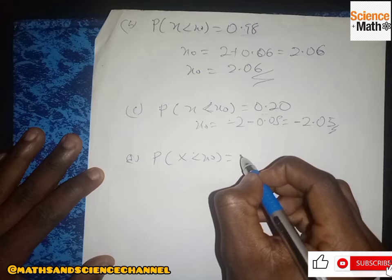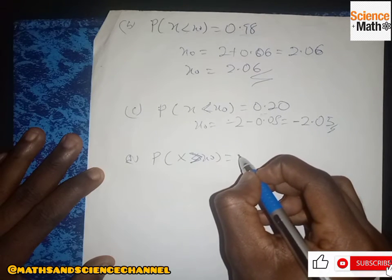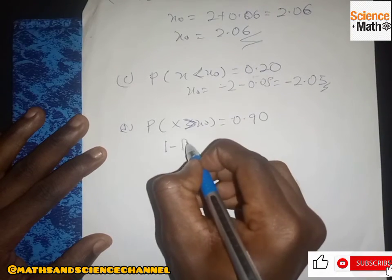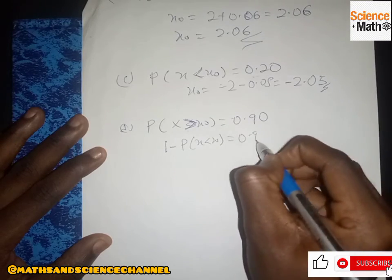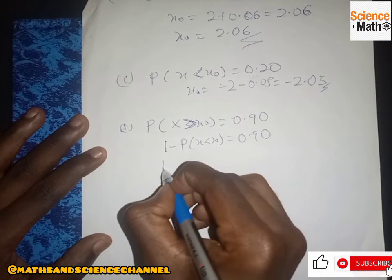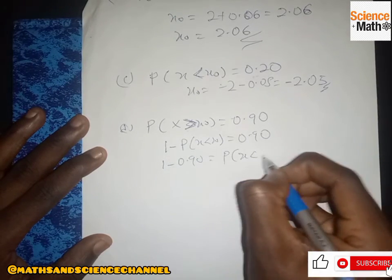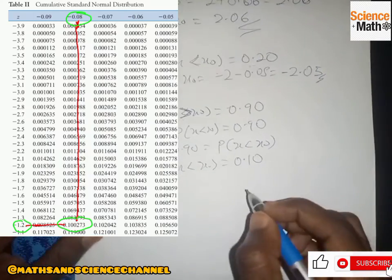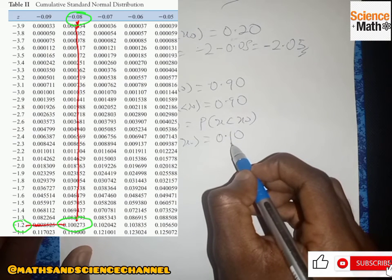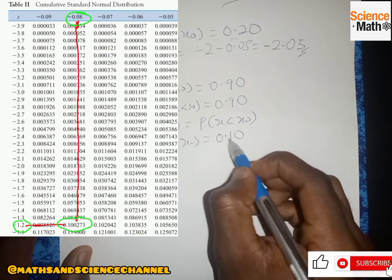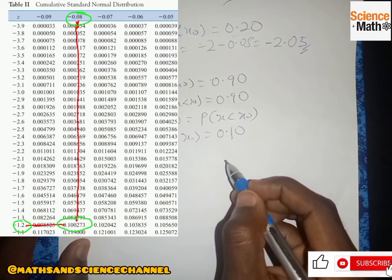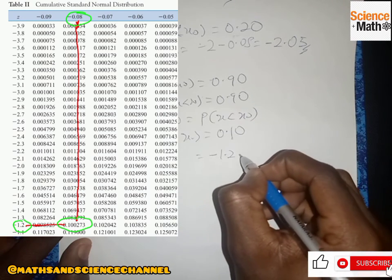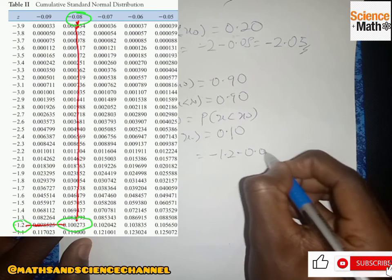For part (d), P(S > s-naught) = 0.09. Since it is 'greater than', we convert: 1 minus P(S < s-naught) = 0.09, so P(S < s-naught) = 1 minus 0.09 = 0.10. Looking up 0.10 on the z-table, we get negative 1.2 on the right-hand side and negative 0.08 at the top, giving s-naught = negative 1.28.